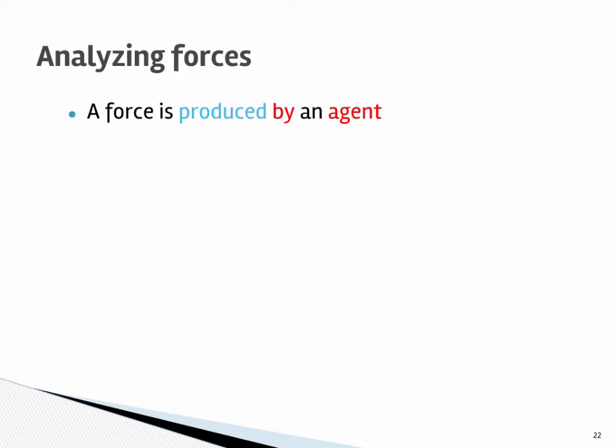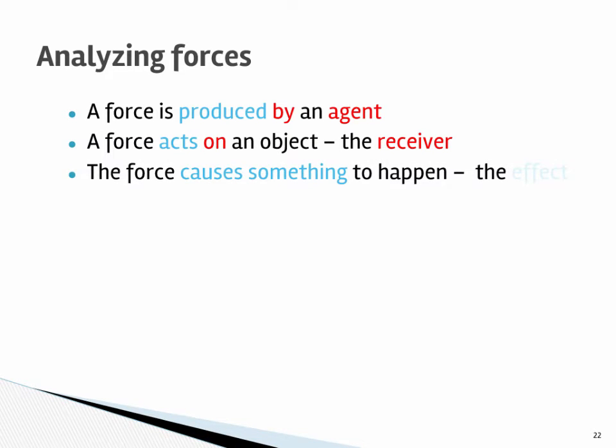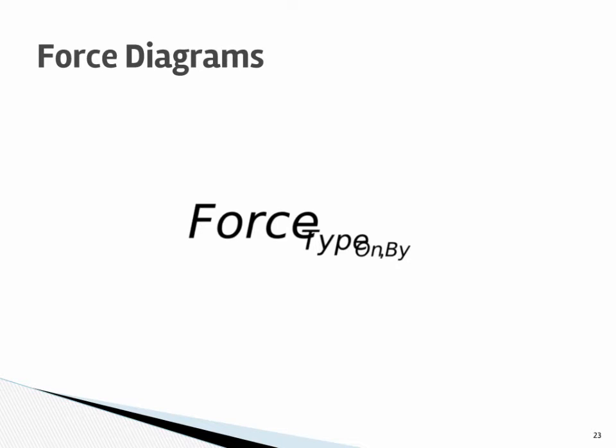So when we analyze forces, a force is produced by the agent, it acts on the receiver, and it causes something to happen, which is the effect. So when you draw a force diagram, you're going to put an F for force. Identify the type, what it's acting on, and what is causing it or the by.